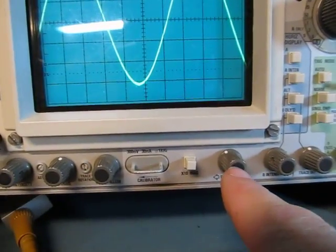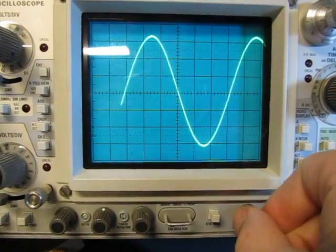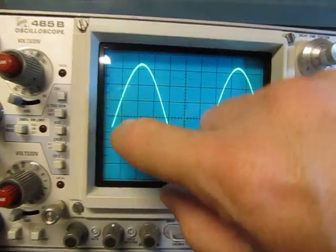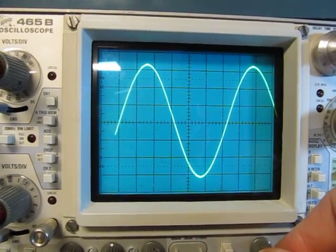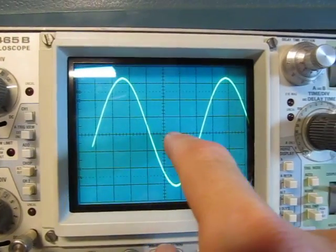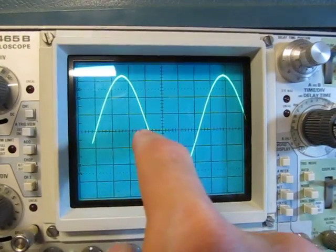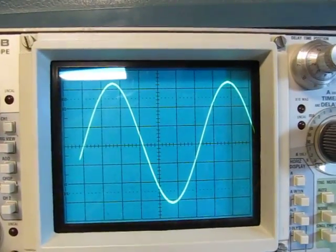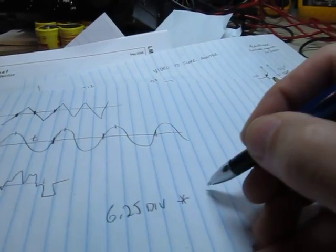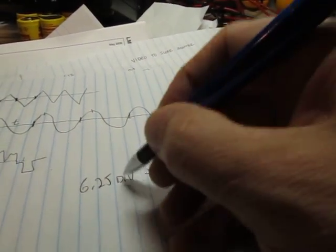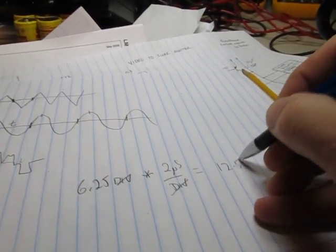So what we can do is use the horizontal position control here to position the waveform back and forth. And what I'd like to do is let's pick my reference point. Let's say I want to pick where the rising edge of the signal crosses that center line. And if I position that at one of these graticles right here, if I position it at that graticle there, now I can just count the number of divisions until it happens again. So in this case, it's 1, 2, 3, 4, 5, 6 and a quarter divisions. We'll call that. So I've got 6.25 divisions. And how much time is that? Well, I know that I'm running at 2 microseconds per division. So I can multiply that by 2 microseconds per division. The divisions then cancel out. And now I'm left with 12.5 microseconds. So I know my period is 12.5 microseconds.